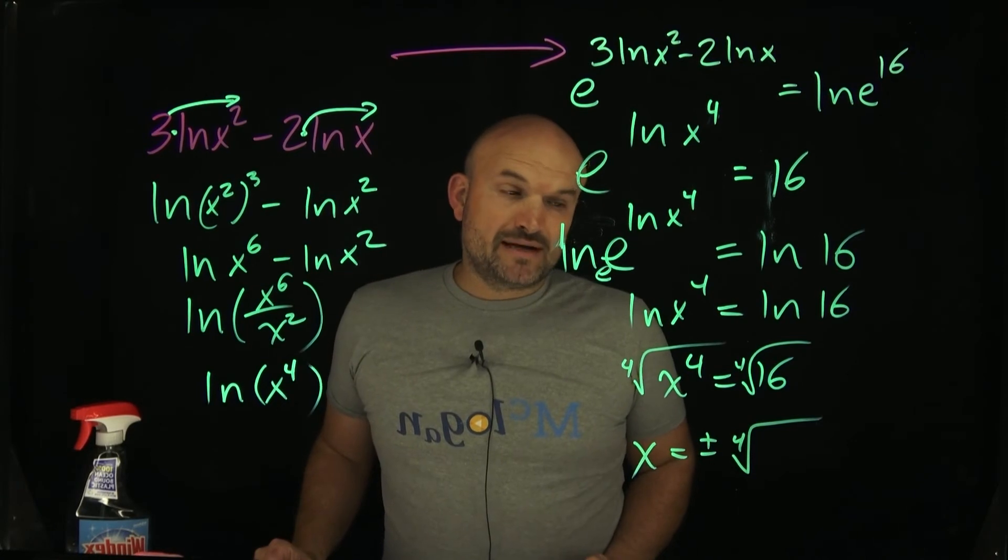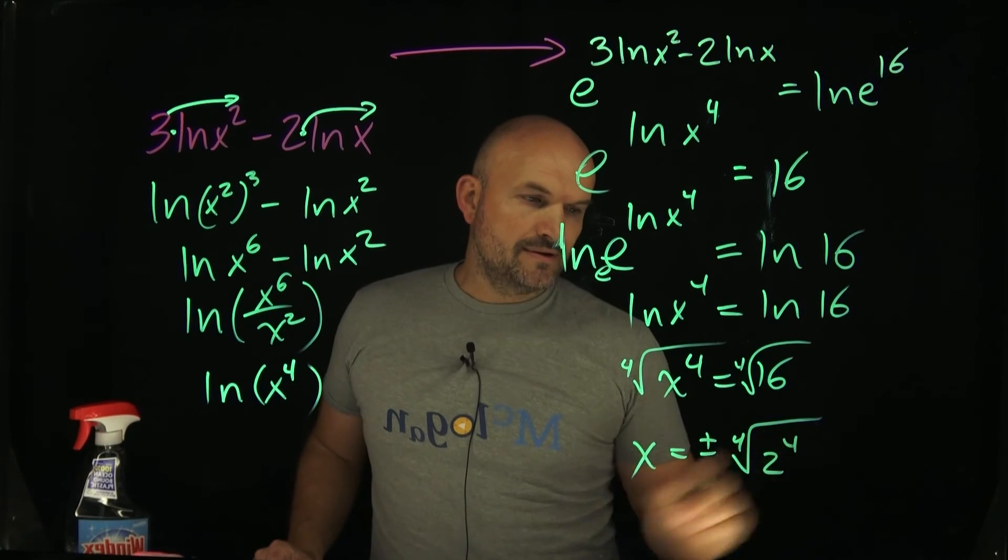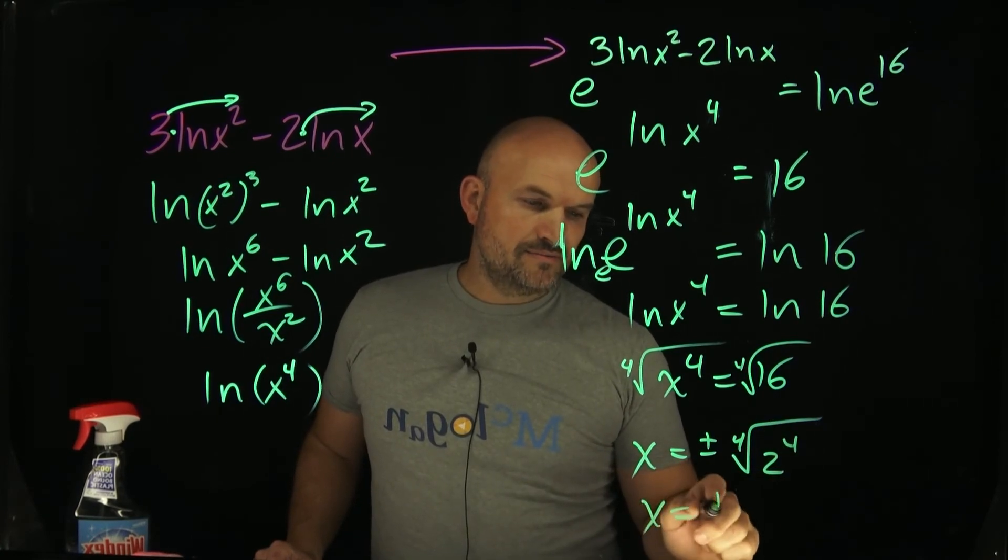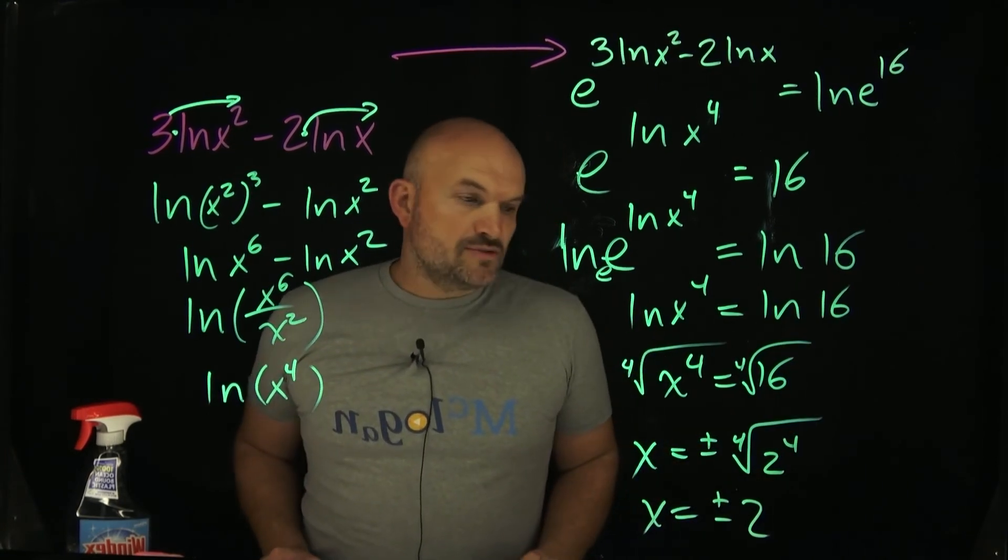Well, the best thing I would recommend doing is using your exponents to be able to rewrite 16 as 2 to the fourth power. Then you say x is equal to plus or minus 2, because the fourth root of 2 to the fourth are going to undo each other. So now we have x equals plus or minus 2.